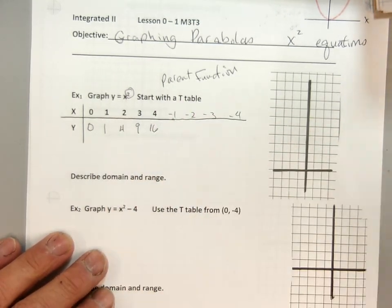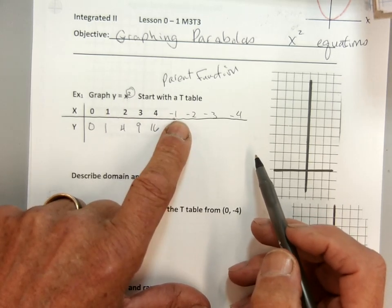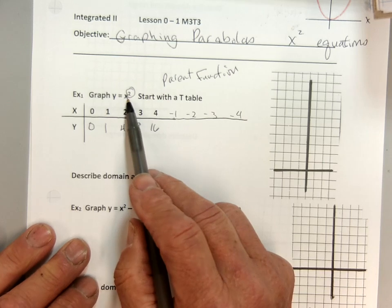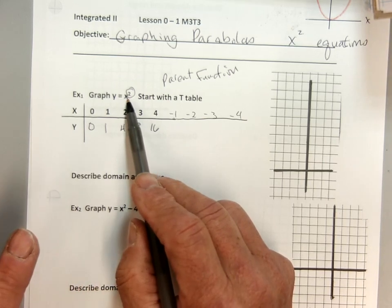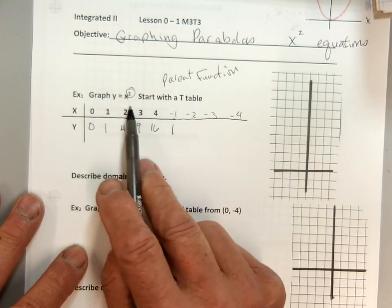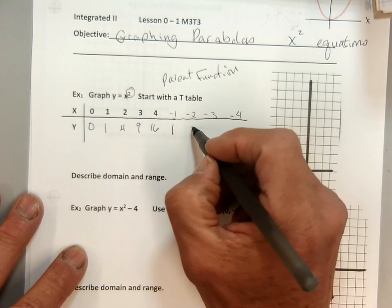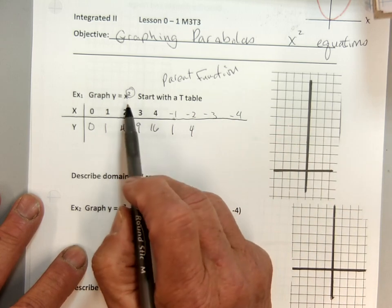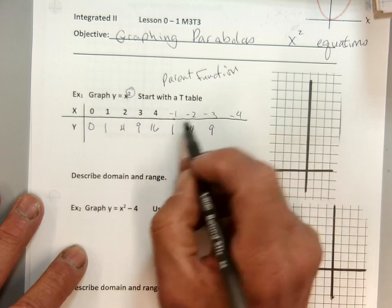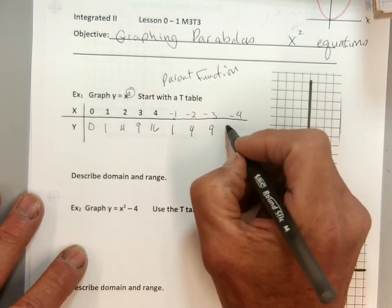Now with the negatives, we have to remember that a negative times a negative is a positive. So if I plug in negative 1: negative 1 times negative 1 is positive 1. If I plug in negative 2: negative 2 times negative 2 is positive 4. Negative 3 times negative 3 is positive 9. Negative 4 times negative 4 is positive 16.